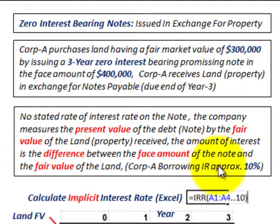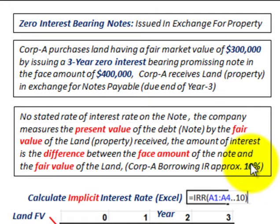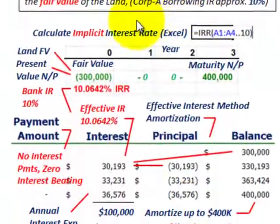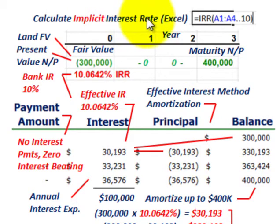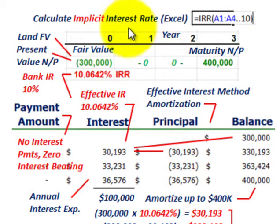Corporation A's borrowing interest rate approximates 10%. Had they borrowed from the bank to pay for this land, they would pay approximately a 10% annual interest rate. We need to calculate an implicit interest rate on this notes payable so we can calculate an interest expense each year.